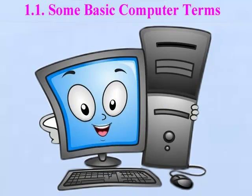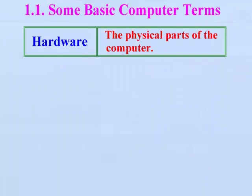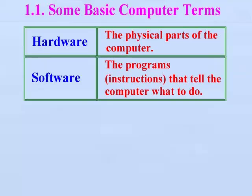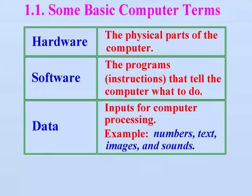Some basic computer terms. Hardware: Hardware is the physical parts of the computer. Software: Software is the programs or instructions that tell the computer what to do. Data: Data is inputs for computer processing.